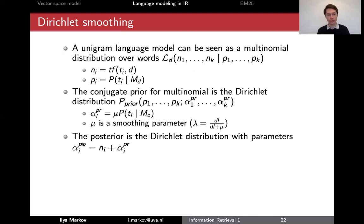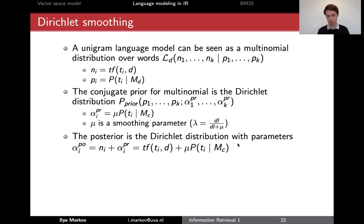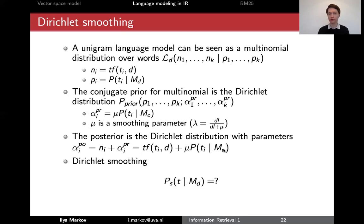The tuning parameter mu relates to lambda from Jelinek-Mercer smoothing. If we have the multinomial distribution with a Dirichlet prior, we get a posterior, and the posterior will also be a Dirichlet distribution with new parameters alpha, where the new posterior parameters will be n_i plus alpha_i — based on Bayesian statistics.